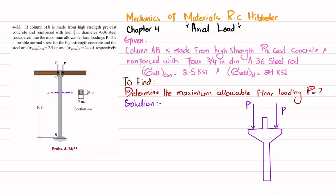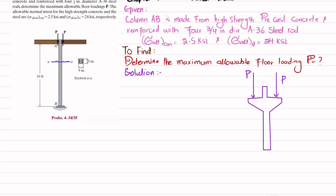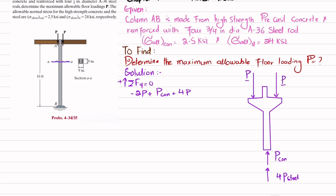Since there are four rods, the total steel contribution is 4·P_steel. The total reaction force will be P_concrete plus 4·P_steel. Using the equation of equilibrium — sum of all forces along the Y-direction equals zero, with upward forces positive — we get: −P + P_concrete + 4·P_steel = 0. This is equation number one.